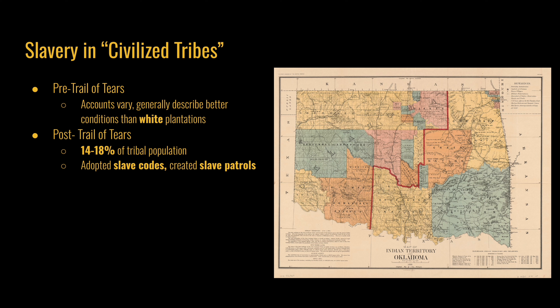After the Trail of Tears, among four of the tribes — the Chickasaw, Choctaw, Creek, and Cherokee — enslaved people made up anywhere between 14 to 18% of the total tribal population. Eventually, they adopted slave codes and created slave patrols to bolster the institution, assisted in recapturing enslaved Black people and returning them to their enslavers, and even fought for the institution in the Civil War as they joined the Confederacy.